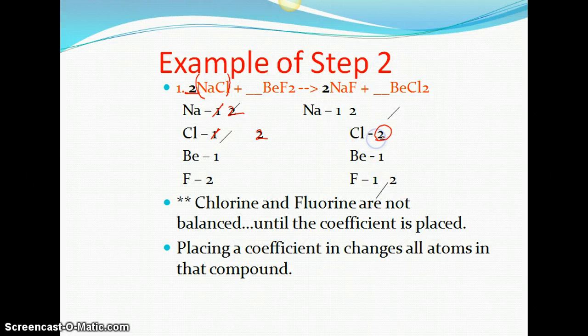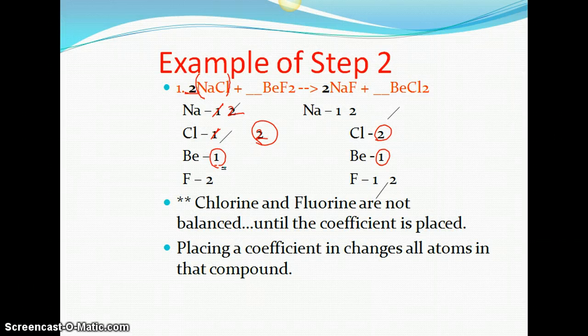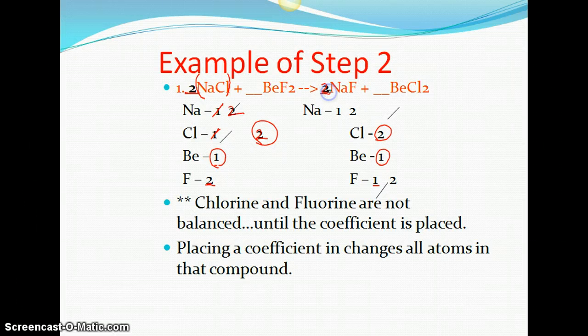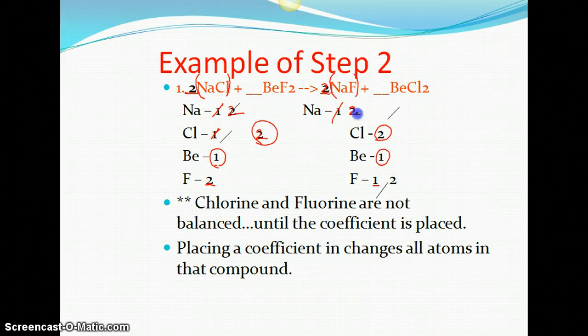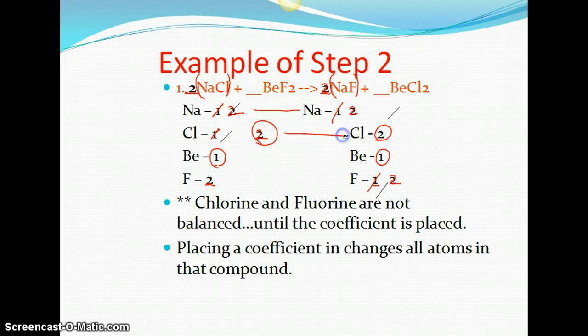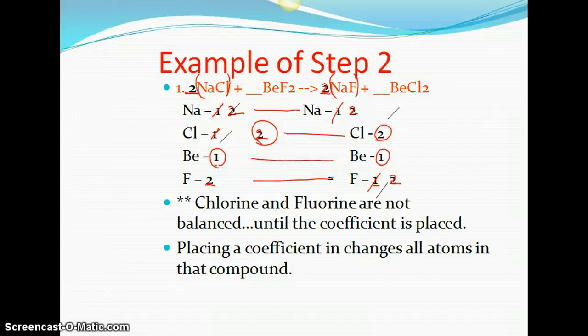So if you look right now, we have chlorine is balanced at two. Now beryllium is happy the way it is. It's at one on each side. But fluorine needs some help. Fluorine has two on the left side but only one on the right side. So we're going to put this two in here. Because two times one is going to give us two. And it's like it's being distributed across the full compound, so Na and F. So Na now becomes two and fluorine now becomes two. Now if you take a look at everything across the board here, sodiums are balanced, chlorines are balanced, berylliums are balanced, and fluorines are balanced. At this point, we are perfectly fine. There doesn't need to be a number here and there doesn't need to be a number here.